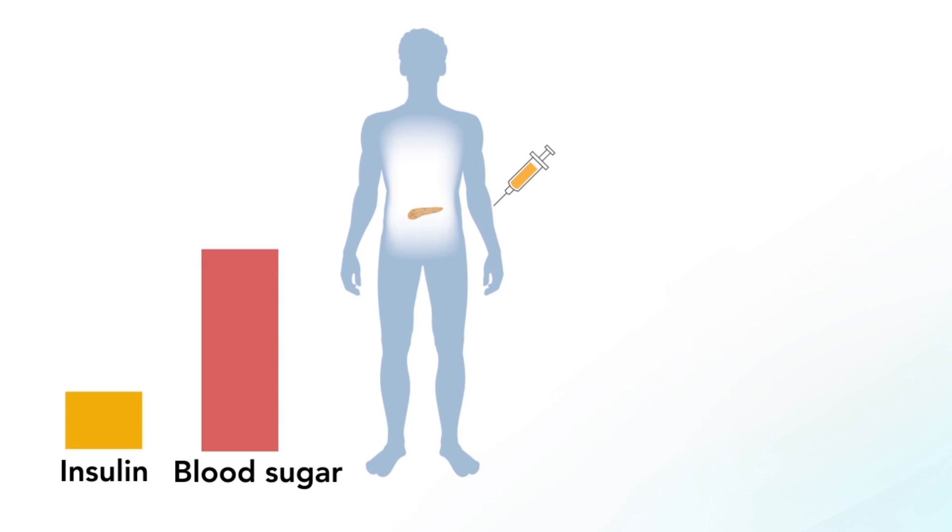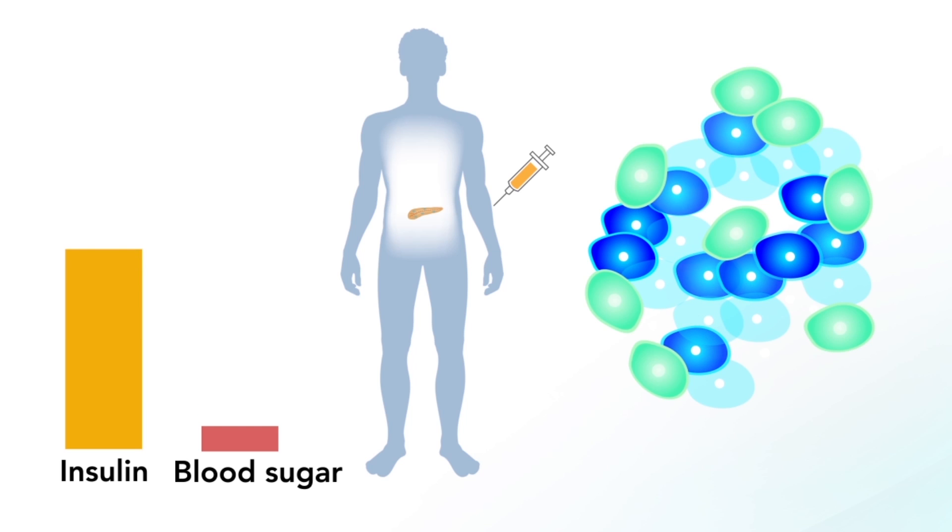Doctors can prescribe external insulin and other medications to lower blood sugar, but no current treatments stop the destruction of beta cells, so the disease gets worse over time.